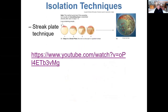Let's talk about three different isolation techniques — we're going to be performing all of these in lab. The first is the streak plate technique. The streak plate technique involves utilizing an agar plate and an inoculating loop. You obtain a sample — it could be from a broth, a slant, or even a plate. The inoculum on the tip of that wire loop contains more than one species of bacteria, and we want to separate these out to individual colonies. The goal is to isolate the various species within that sample.